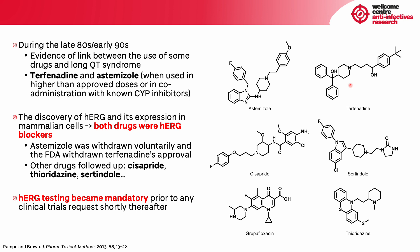Other drugs followed, such as cisapride, sertindole, grepafloxacin, and thioridazine. As a final consequence, HERG testing became mandatory prior to any clinical trials shortly thereafter, meaning that if you want authorization to test a drug in humans, you have to prove that your drug is not a HERG blocker.